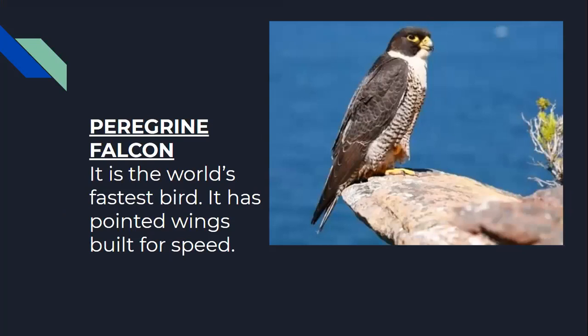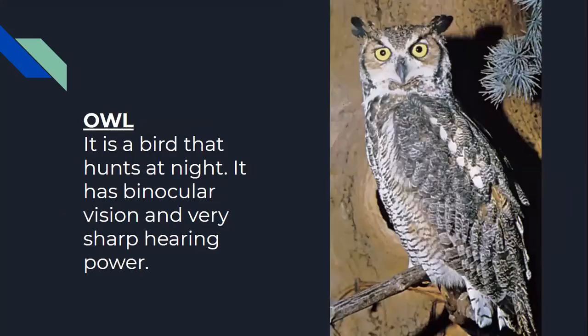Next, peregrine falcon — it is the world's fastest bird. It has pointed wings built for speed. You can see this beautiful bird and its feathers are pointed. Next, we have owl — a bird that hunts at night. It has binocular vision and very sharp hearing power.